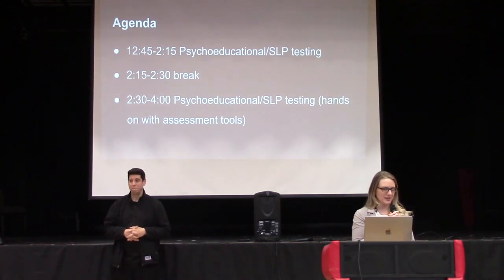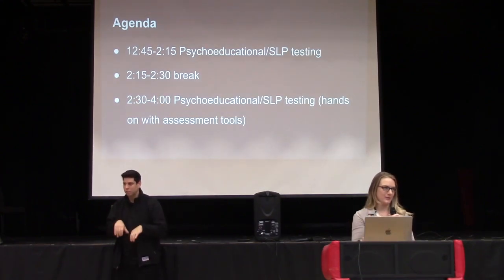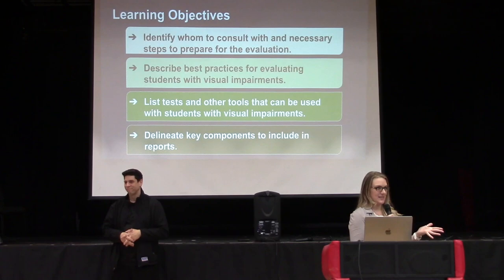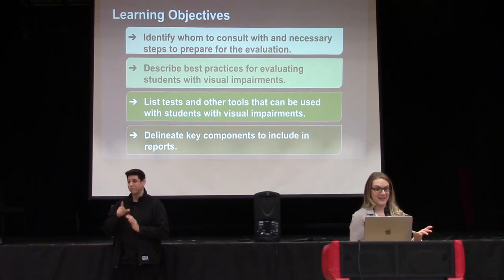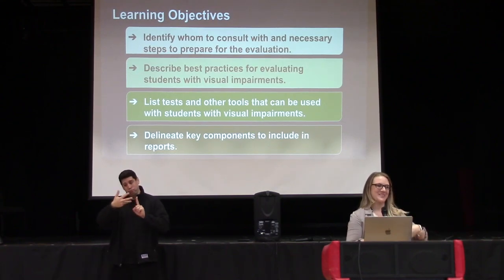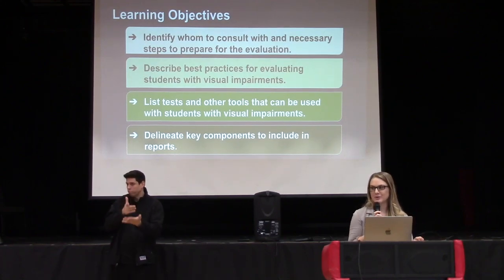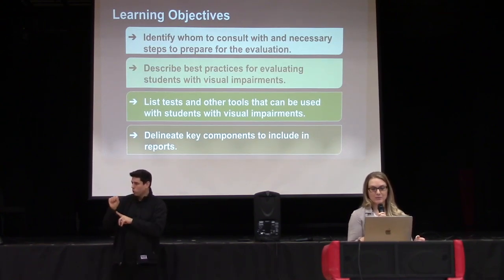Just so you know, we're going to try to stick to time. There will be a break and we'll be doing some activities throughout the day. Our main learning objective is that there is so much more to visual impairment than we can fit into three hours. We're going to focus on identifying with whom you should be consulting and the necessary steps to prepare for evaluating a student who is blind or visually impaired, describe best practices for evaluating these students, list tests and other assessment tools that may be utilized as well as possible adaptations, and delineate key components to include in your notes.